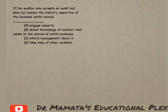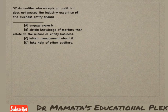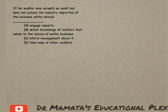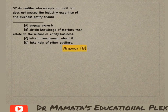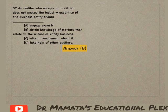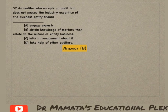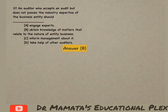Next question: An auditor who accepts an audit but does not possess the industry expertise of the business entity should — include young age experts, obtain knowledge of matters that relate to the nature of the entity of business, inform management about it, or take help of other auditors? In this case, the auditor needs to obtain excess knowledge about the nature of the business entity and then go into the auditing process. So option B is the correct answer.